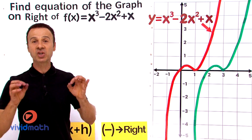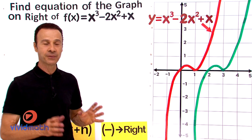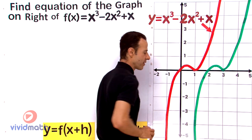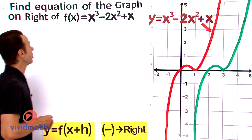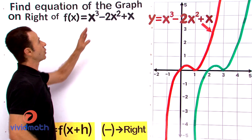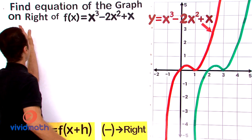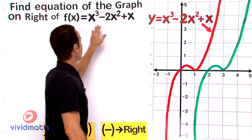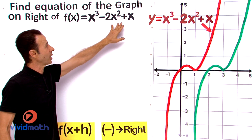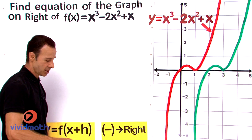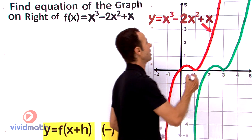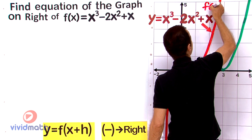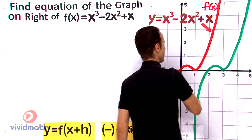In this video episode I'm going to show you how to find the equation of this curve here in green. The question is: find the equation of the graph on the right. The function f(x) is x cubed minus 2x squared plus x - that's our function f(x) on the left.